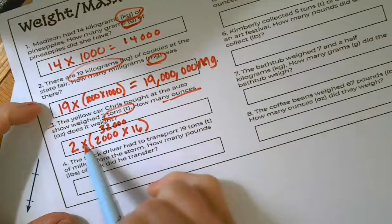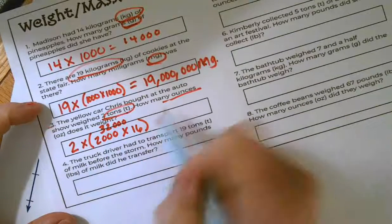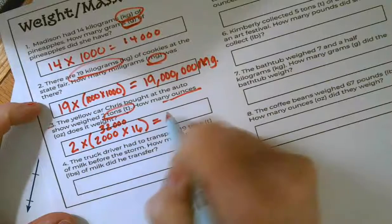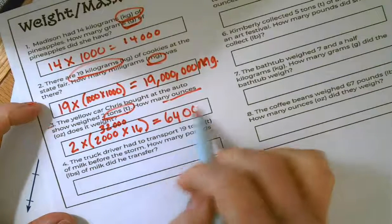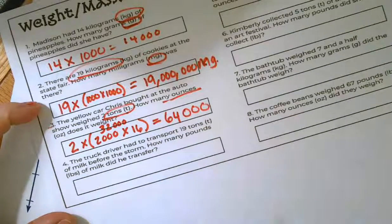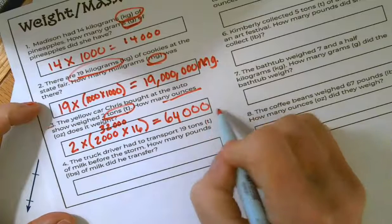All right. And so now I need to multiply two times 32,000. I know two times 32 is 64. And I'm going to annex my three zeros. So it's going to be 64,000 ounces.